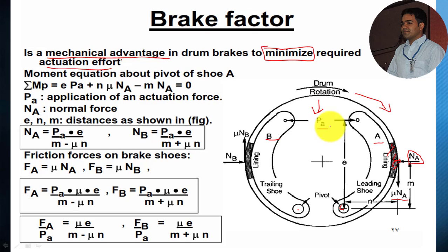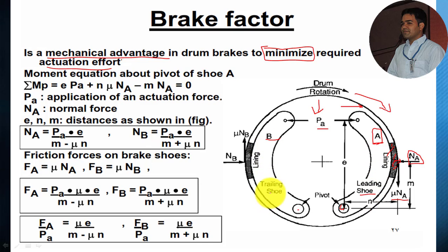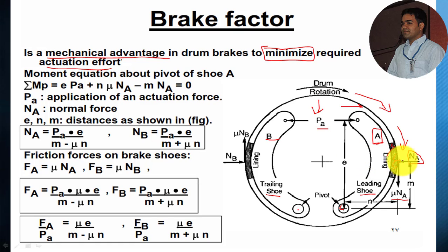When we apply the actuation effort or brake force, both shoes tend to move apart towards the drum. Due to this movement and considering the direction of rotation of the drum, shoe A becomes a leading shoe while shoe B becomes a trailing shoe. In the case of the right-hand side brake shoe, it is known as a leading shoe because considering the rotation of the drum, the friction force tries to drag this leading shoe in the same direction, and the braking force applied at this point will be higher compared to the actuation force. That's why this shoe is known as a leading shoe.